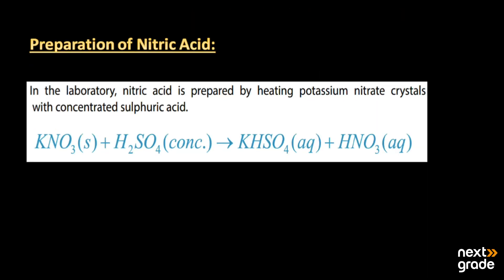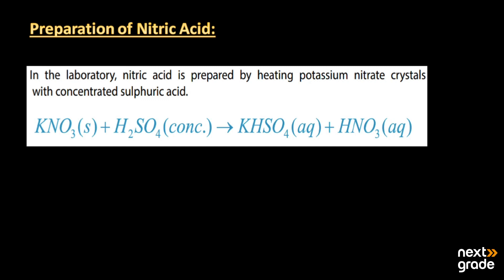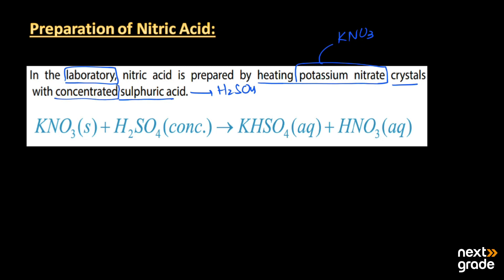Now let's look at the main properties, but before that we must know how to prepare nitric acid. In the laboratory, nitric acid is prepared by simple heating of potassium nitrate (KNO3) crystals with concentrated sulfuric acid (H2SO4). This reaction produces three products: potassium bisulfate, along with nitric acid (HNO3). This method is only used for small-scale or laboratory production of nitric acid.